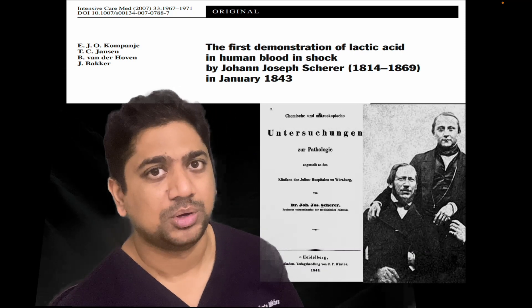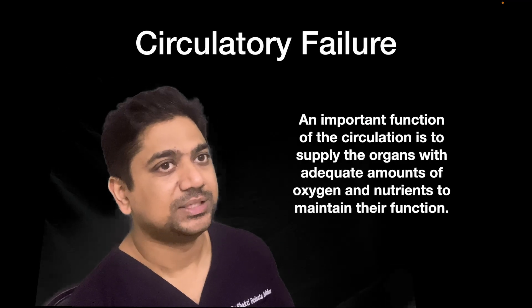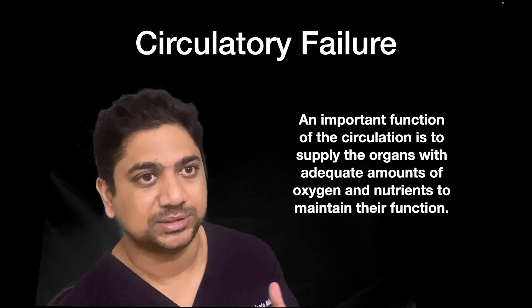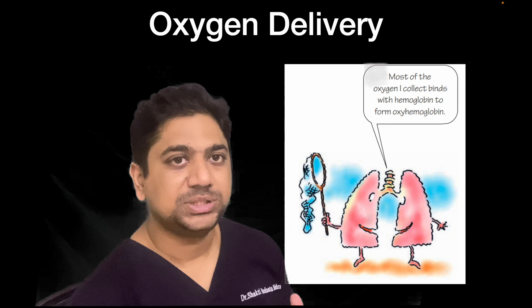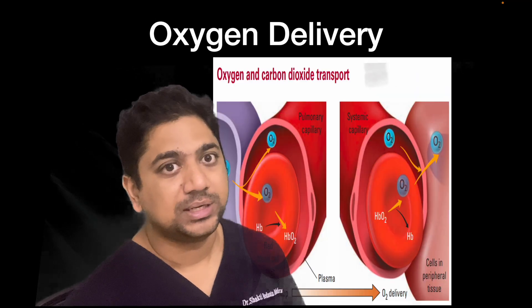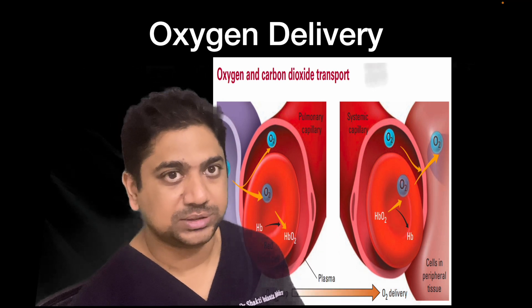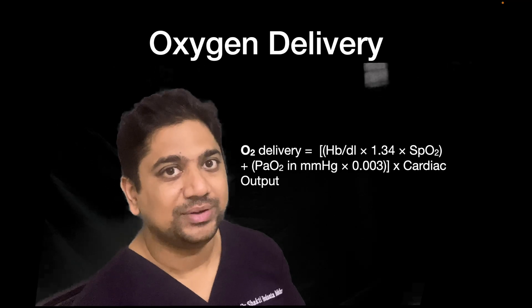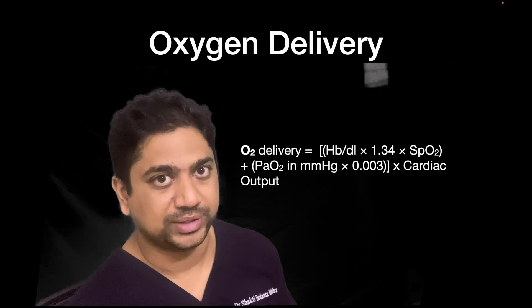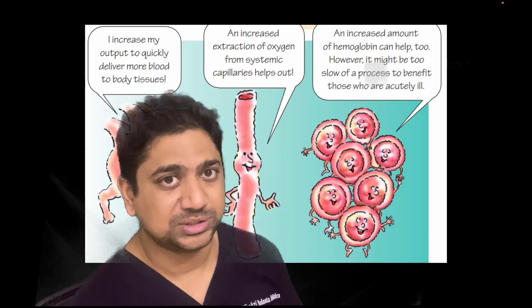The most important function of the circulatory system is to provide nutrition and oxygen to the tissues. If that is not achieved, we term it circulatory failure. Oxygen delivery is critically important: oxygen is taken up in the lungs by the red blood cells, which transit through the circulation and deliver oxygen to the tissues. Oxygen delivery is determined by hemoglobin concentration, cardiac output, and oxygen dissolved in the plasma.